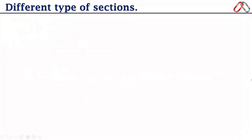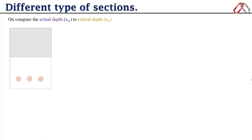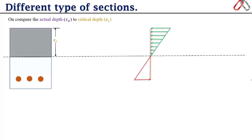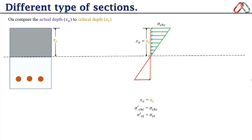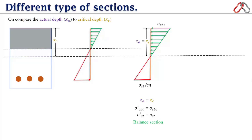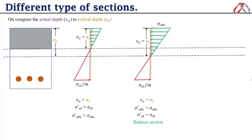Different types of section are classified by the relative position of actual neutral axis xa and critical neutral axis xc. When xa = xc, both the actual compressive bending stress and actual tensile stress in steel reach permissible levels simultaneously — this is a balanced section. When xa < xc, steel stresses reach permissible levels but actual concrete stresses σ'_cbc remain less than σ_cbc — we call this an under-reinforced section.